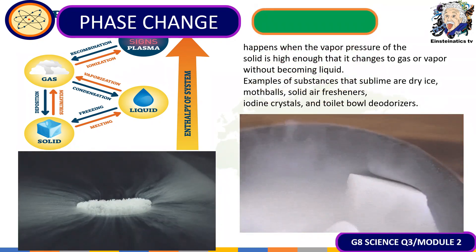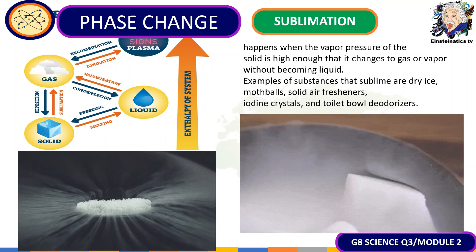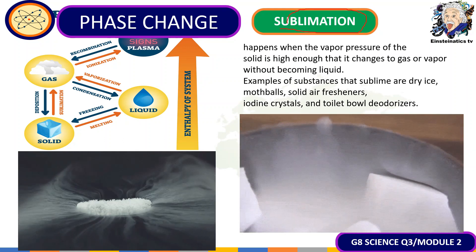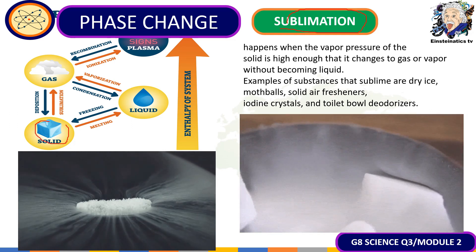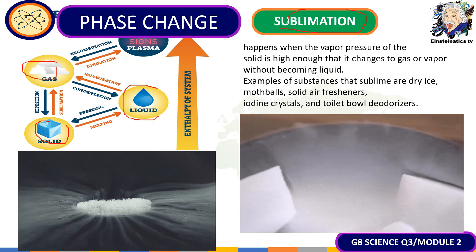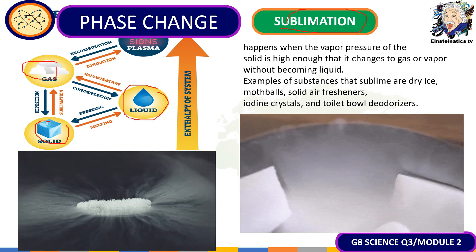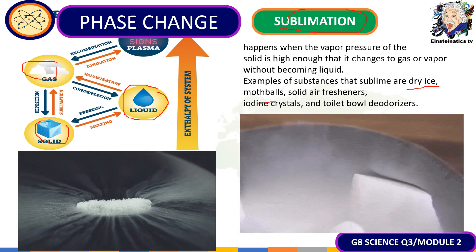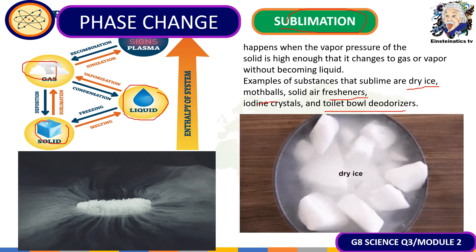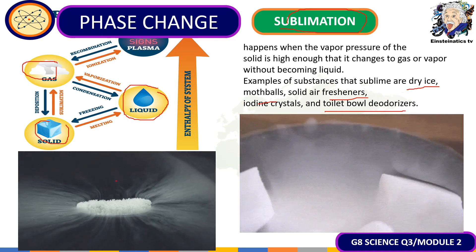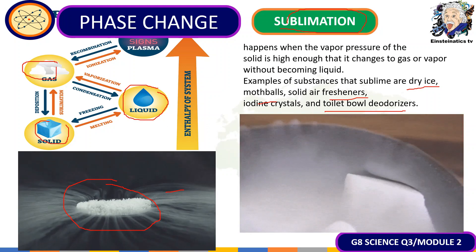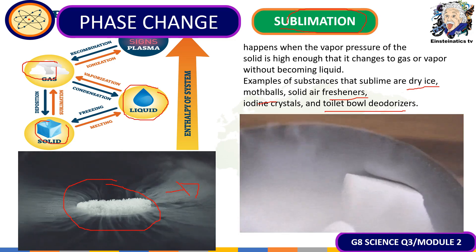Another physical change is known as sublimation. Sublimation happens when a solid turns directly into a gas without passing through the liquid state. Examples include dry ice, mothballs, air fresheners, iodine crystals, and toilet bowl deodorizers. As shown in the picture, solid particles turn directly into gas particles.